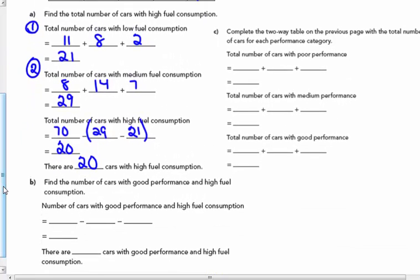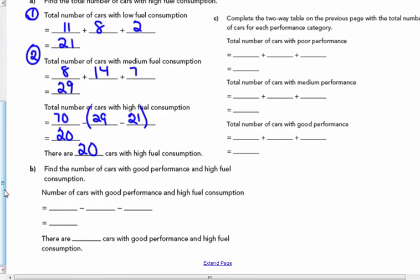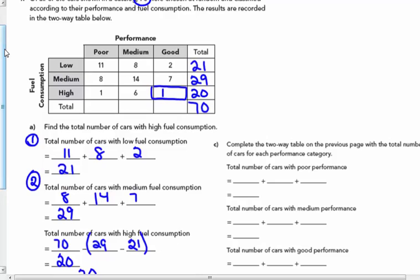Find the number of cars with good performance and high fuel consumption, that missing piece, this box right here. If there are 20 that have high consumption, 20, take away that 1 plus 6, I could add it together, would give me 13. So there are 13 cars with good performance that have high fuel consumption.